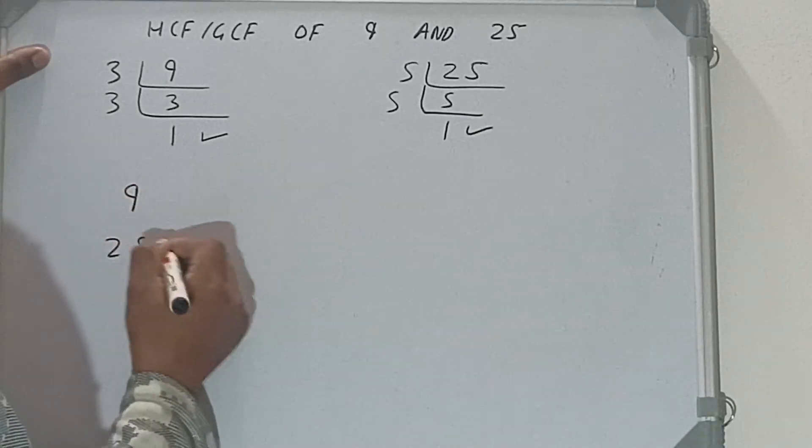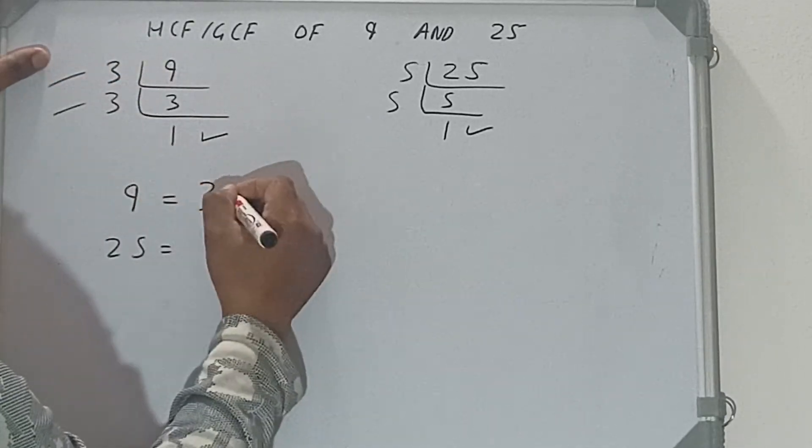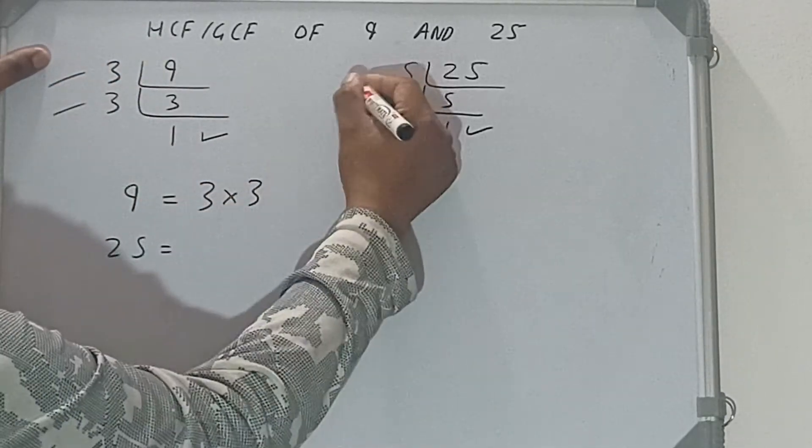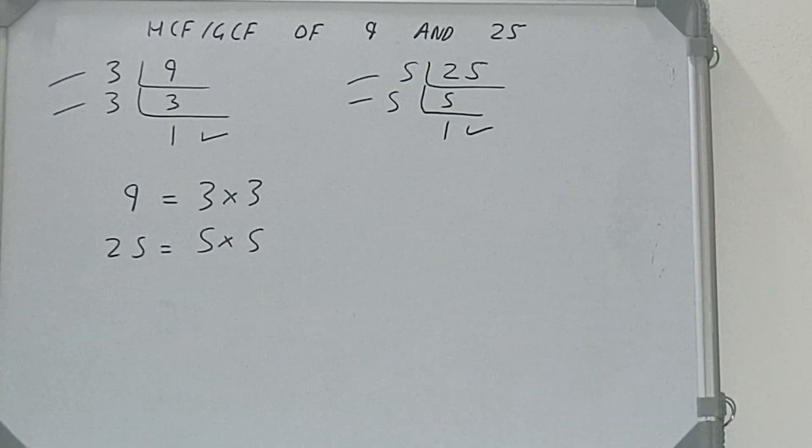Now in the next step we need to write down both the numbers with their respective prime factors. So for 9 what we got: 3 × 3. For 25 what we got: 5 × 5.